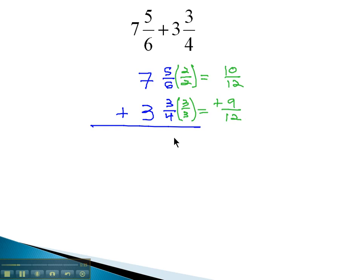10 twelfths plus 9 twelfths is 19 twelfths. And then when we add the whole numbers, 7 plus 3, we get 10.